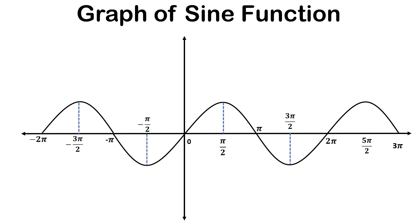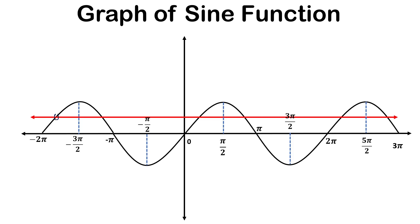Now we shall draw a horizontal line. Here we see that this horizontal line cuts the graph of the sine function in 1, 2, 3, 4, 5, 6 points. From -2π to 3π, this horizontal line intersects the graph of the sine function in 6 points. So this function is not bijective.